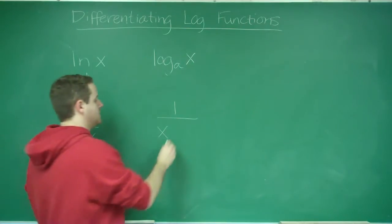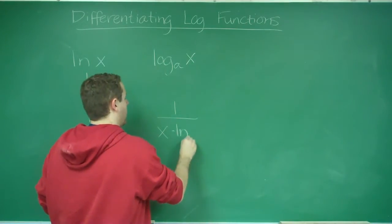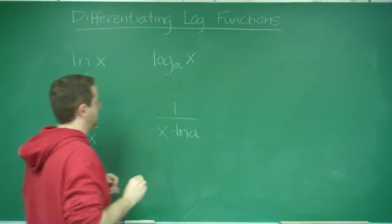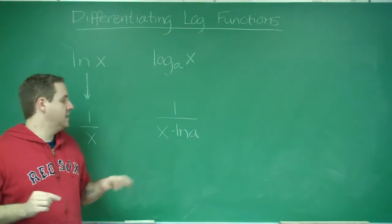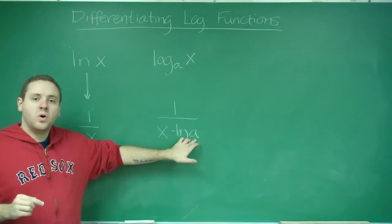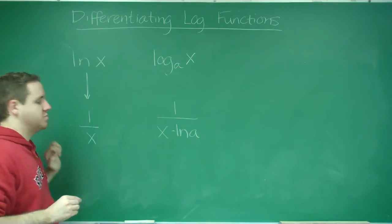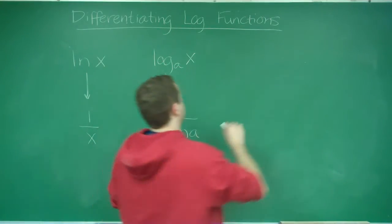but you're going to need to multiply by ln of a in the bottom. You can see that if you have ln, which is log base e, ln of e is 1, this goes away and just becomes the 1 over x. So for a quick example,